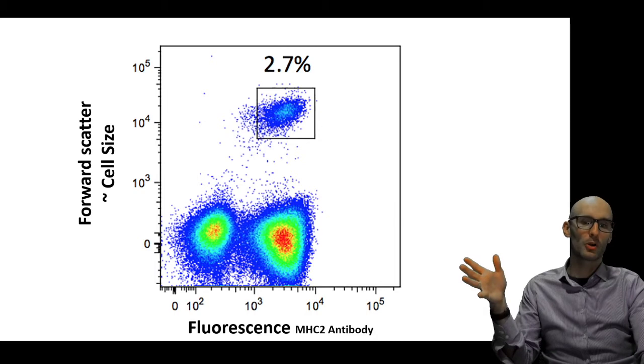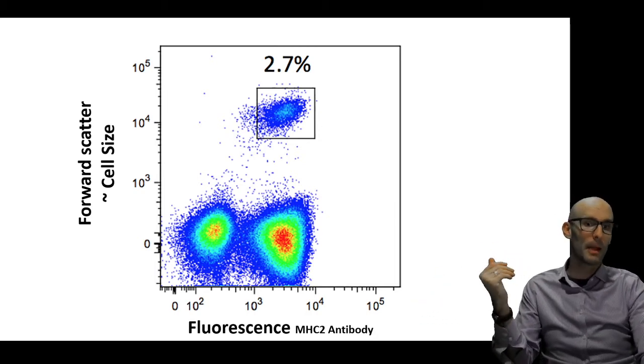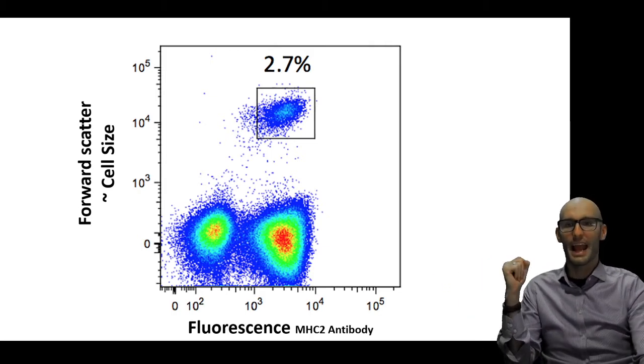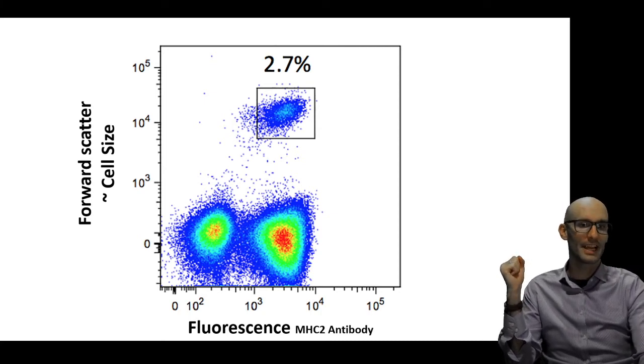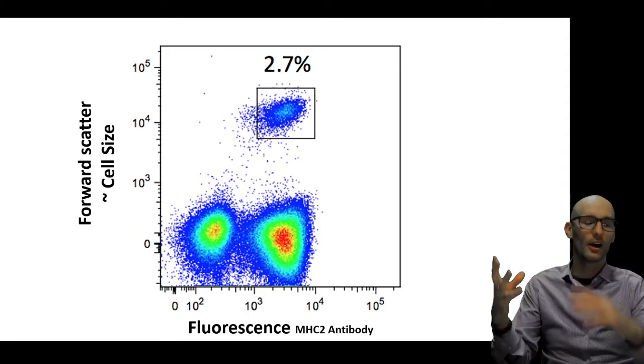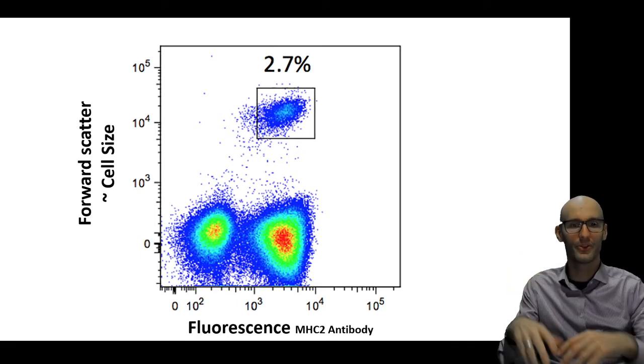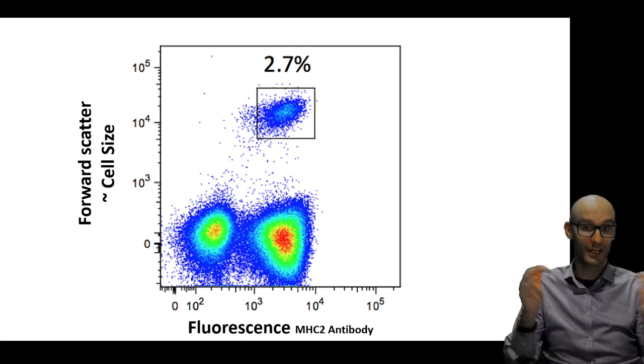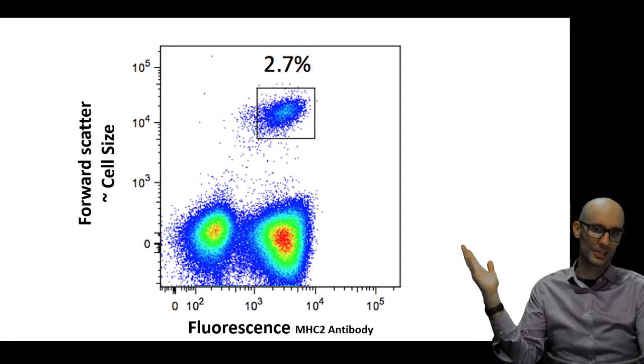Here we've got a huge number of MHC2 positive cells that are small. So that's a lot of monocytes. So maybe we're looking in the blood. And then up here, we have the large cells that are expressing MHC2 and are macrophages. And what you can do in the software, which is actually kind of cool, you can draw a box around it and see that 2.7% of all the dots are macrophages. So you can say 2.7% of my cells are macrophages. Then you could give a treatment and see if you end up with more or less macrophages, for example.